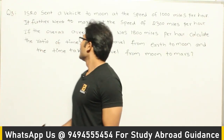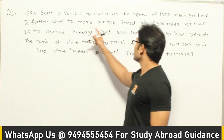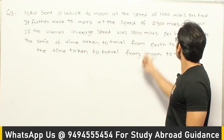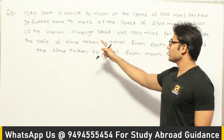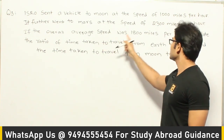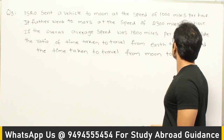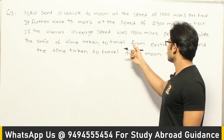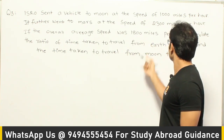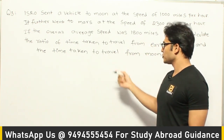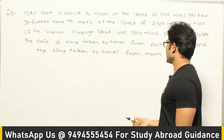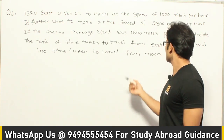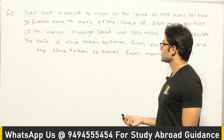Let's see this question. ISRO sent a vehicle to the moon at a speed of 1000 miles per hour. It further went to Mars at a speed of 2300 miles per hour. If the overall average speed was 1800 miles per hour, then calculate the ratio of time taken to travel from Earth to Moon and the time taken to travel from Moon to Mars.